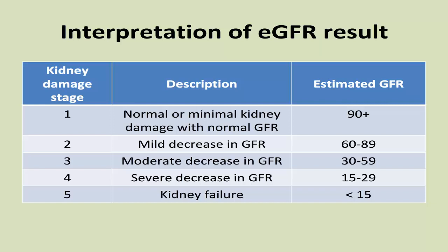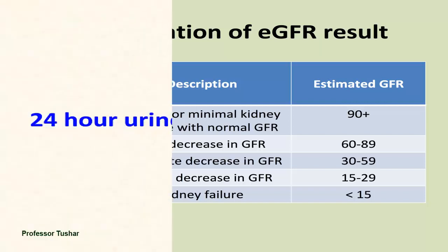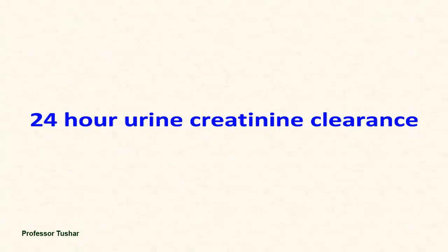Values between 60 to 89 indicate a mild decrease in GFR. Values between 30 to 59 indicate a moderate decrease in GFR. Values between 15 to 29 indicate a severe decrease in GFR. Values below 15 indicate kidney failure.